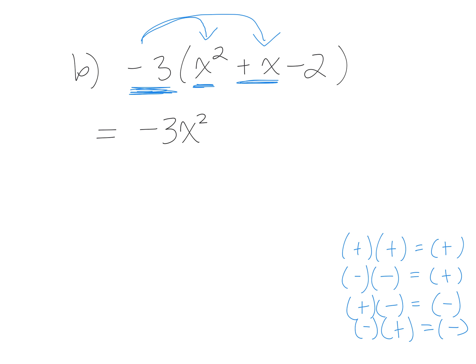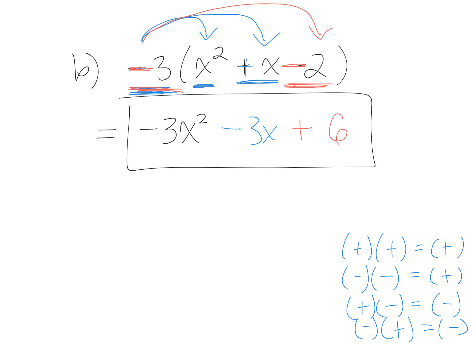What is a negative times a positive? Negative. What's 3 times x? 3x. So that gives us negative 3x. Last step: take negative 3 and multiply it by negative 2. Negative 3 times negative 2 is positive 6. And that's the answer. Take the term outside the bracket and multiply it by everything inside the bracket.